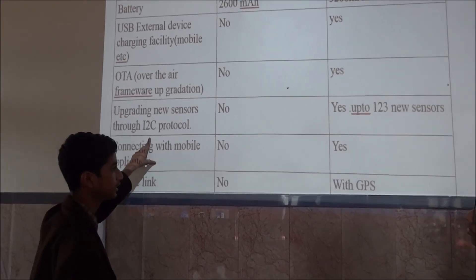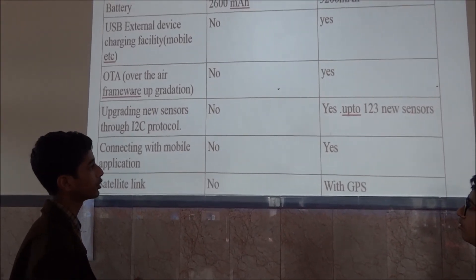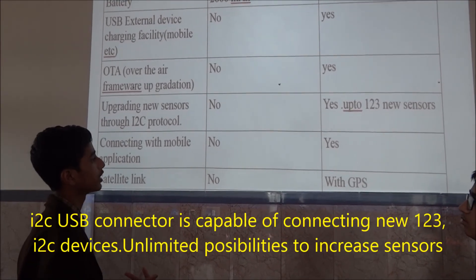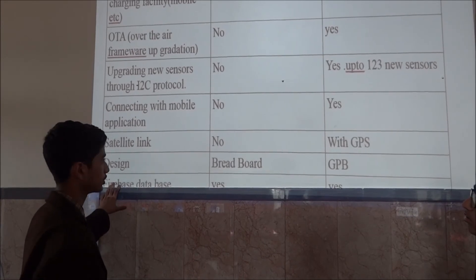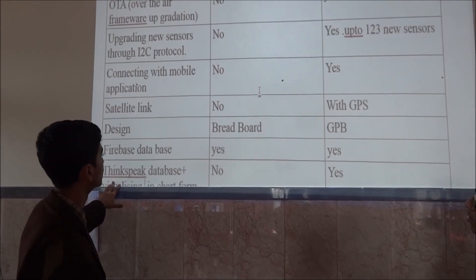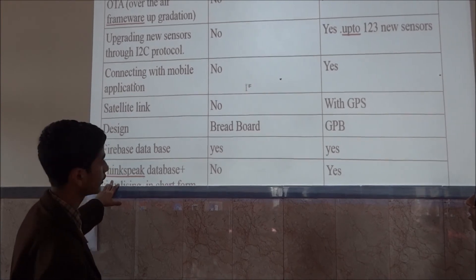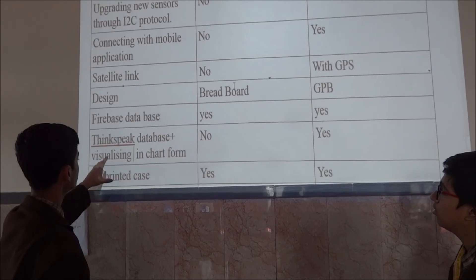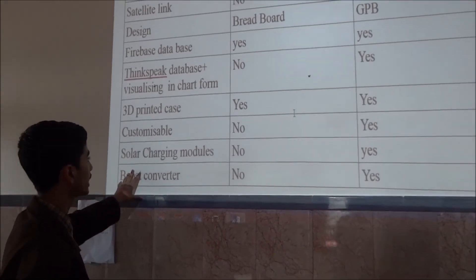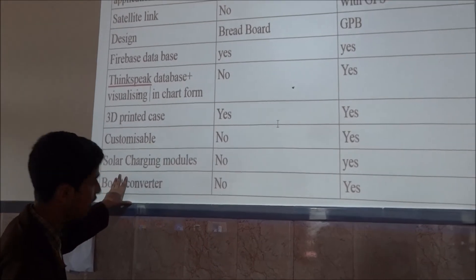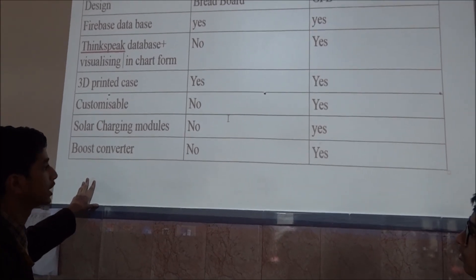Then, we also have the I2C protocol. That means in our old prototype, we can't increase the sensors without doing any physical upgrade. But in our new prototype, we can increase the sensors number up to 123 by using that I2C bus body. Now, we also have the connection with our mobile application through our Bluetooth. We are also giving the satellite link. And earlier, the design was made on a breadboard. But now, we are using our PCB. We also have a Firebase database. But now, we are also using the ThingSpeak which helps us in visualizing the data in a graph box. They both are in a 3D printed case. Our new prototype is customizable. That means we can upgrade it whenever we want it. The solar charging point is the same. And we also have added a boost converter to boost the power that the solar cell can gain.